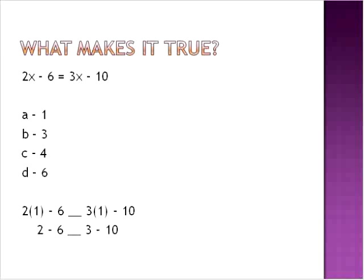2 times 1 is equal to 2, and 3 times 1 is equal to 3. 2 minus 6 is negative 4, and 3 minus 10 is negative 7. They're not equal to each other. 2 minus 6 is not the same as 3 minus 10. Let's go ahead and look at the next question.